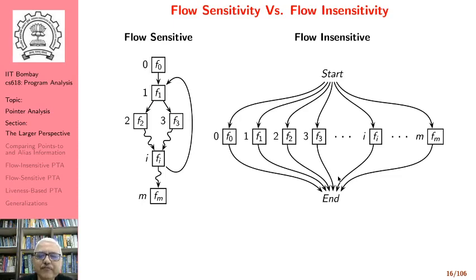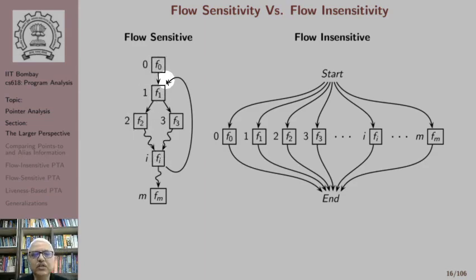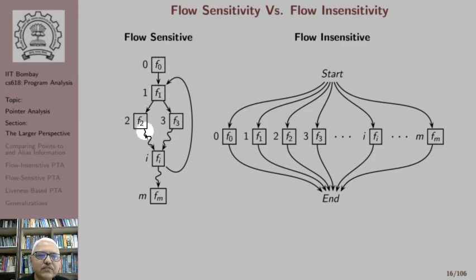We have a particular control flow graph. F0, F1, F2 are the flow functions of the corresponding nodes. When we perform flow-sensitive analysis, we apply F0 to the boundary information, compute some information out of it, and then that information is fed as input to the next node where F1 is applied. So flow-sensitive analysis maintains an order of function applications.